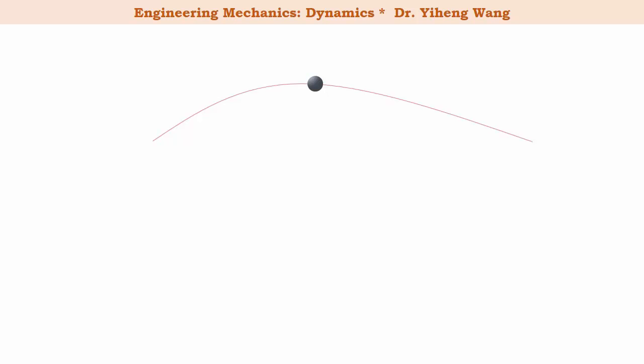We learned already that even the most general case of particle motion can be studied using normal and tangential components. From any given position of a particle, we can always draw a tangential axis that is tangent to the path pointing towards the direction of motion, and a normal axis that is perpendicular to the tangential axis and points towards the center of curvature. The resultant force acting on this particle can be completely resolved into two components: one along the tangential direction and the other along the normal direction.